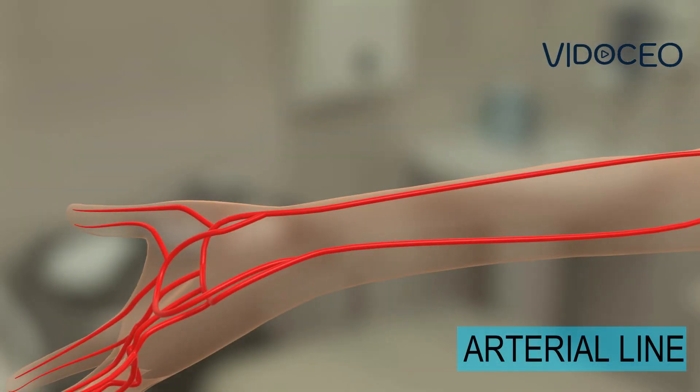The wrist is a common location to have an arterial line for monitoring blood pressure. The doctor will feel the pulse of the artery on your wrist. Then local anesthesia will be injected to numb the area.